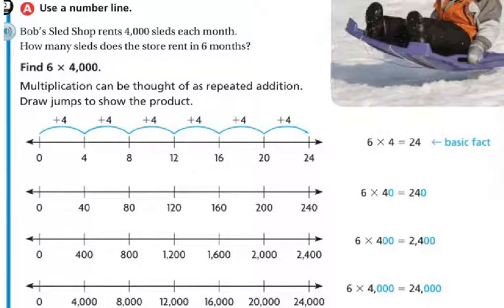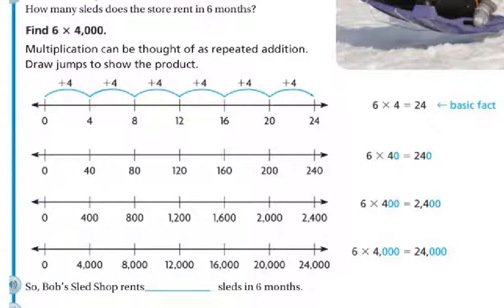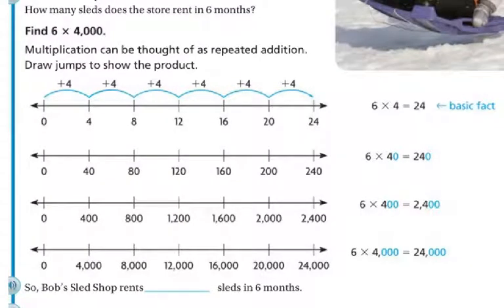Other ways — use a number line. So Bob's Sled Shop rents 4,000 sleds each month. How many sleds does the store rent in six months? So we're going to find 6 times 4,000, and we're going to use the number line. With multiplication, as I said, multiplication can be thought of as repeated addition. So every time I jump, it's plus 4.